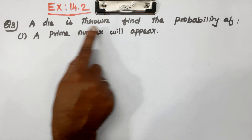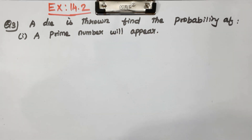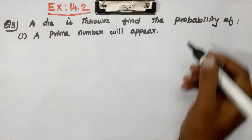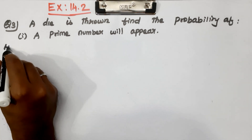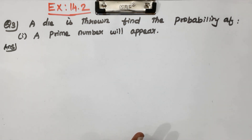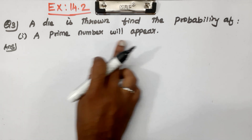A die is thrown. Find the probability of each subdivision. The first subdivision: your prime number will appear.